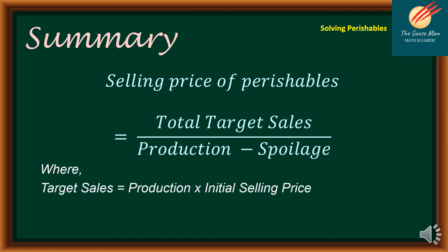To summarize: the selling price of perishables equals total target sales divided by production minus spoilage, where total target sales equals production times initial selling price. That ends our discussion on solving perishables. This is Teacher Anand Guzman — don't forget to subscribe to my channel so you will be notified about new videos. Thank you!